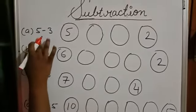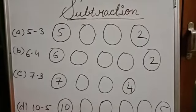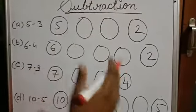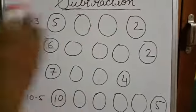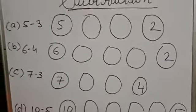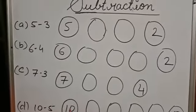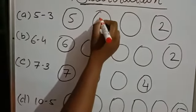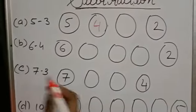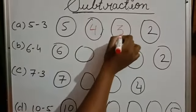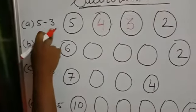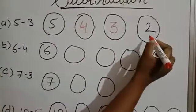In the first exercise, you have to count backward. The first one is 5 minus 3. Backward means you have to go back. Before 5 is 4, before 4 is 3, before 3 is 2. That means 5 minus 3, we are getting the answer 2.